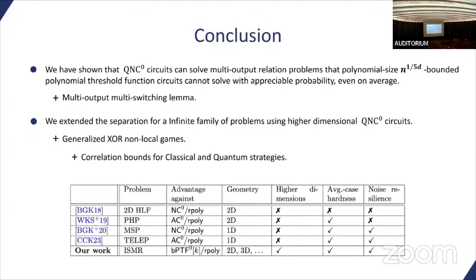Here we have a table comparing our results to previous ones. What we have new is this new separation with this new class. We have this new family of problems, which creates new geometries between which we can solve the problems. We extend to higher dimensions. We get average case hardness also as in the AC0 separation. In our preprint, we have even extended it to the noise resilient version, but it was not part of this talk.